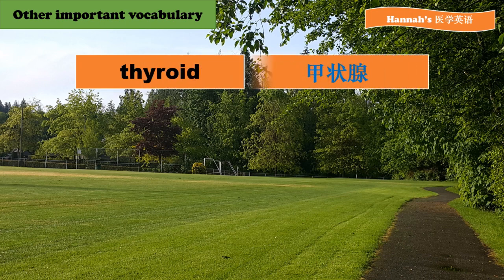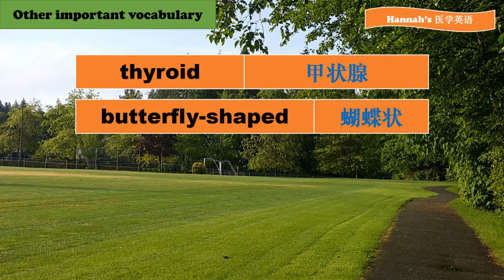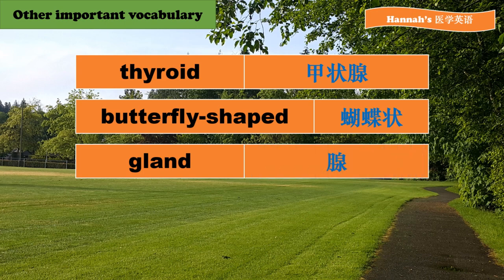Thyroid，甲状腺。Butterfly-shaped：butterfly是蝴蝶的意思，shaped是形状，蝴蝶状。Gland，腺。